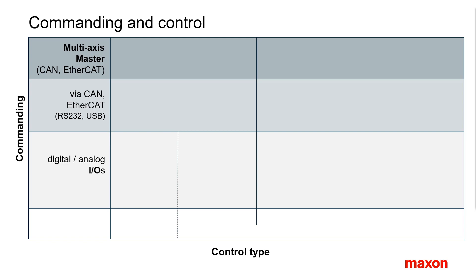The second feature is the kind of control. There are three main types: torque control, speed control, and position control. In speed control, we have to distinguish between simple one-quadrant speed control, usually working with low-resolution feedback, and dynamic four-quadrant speed control with higher-resolution feedback.